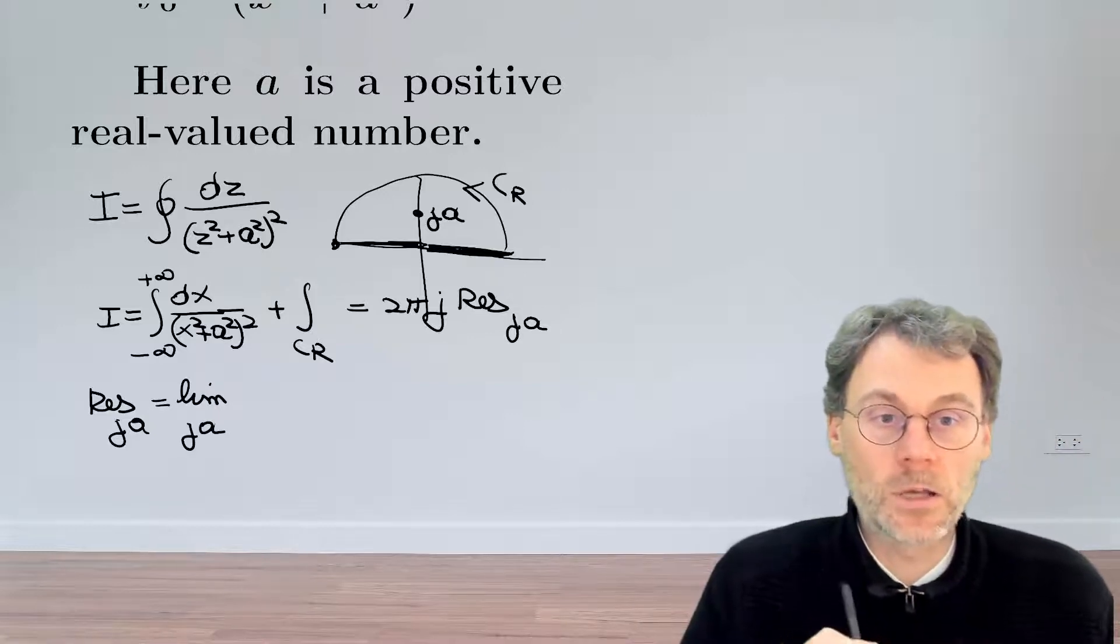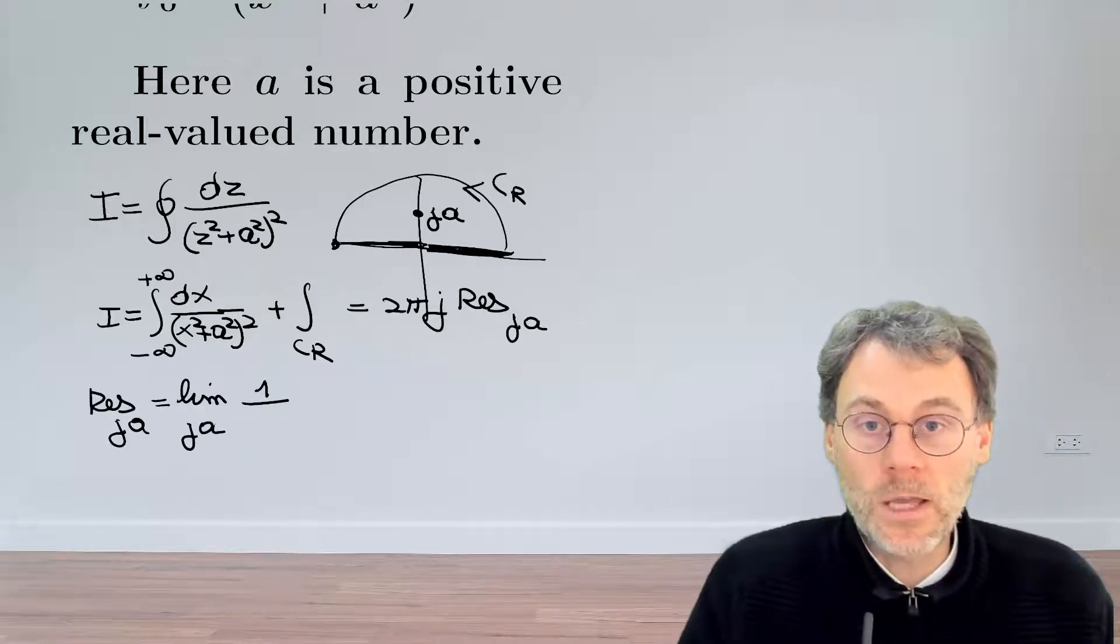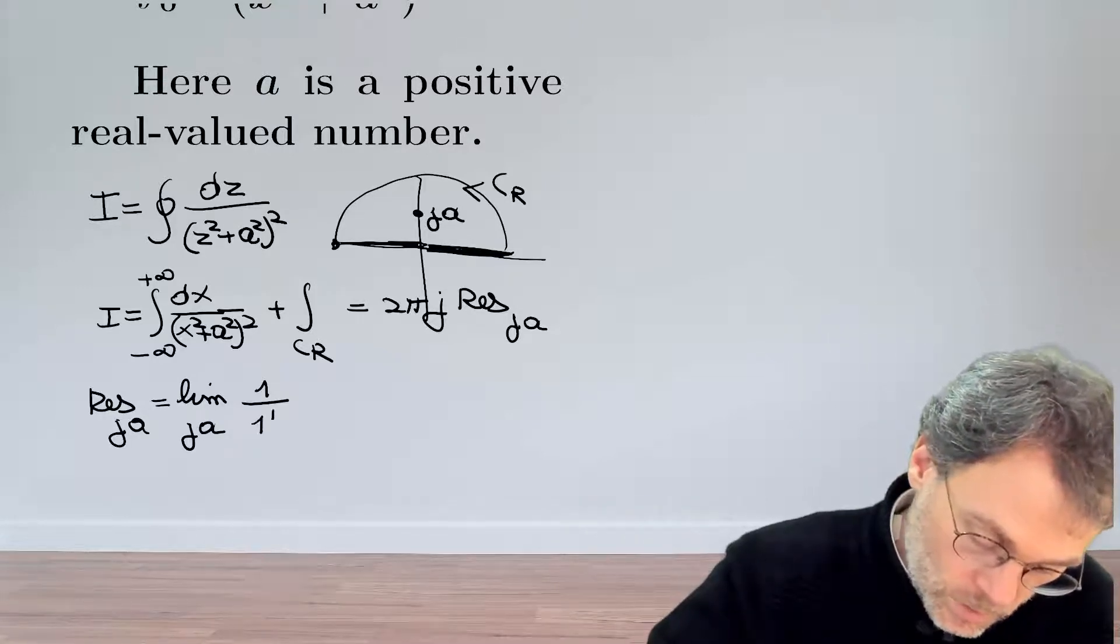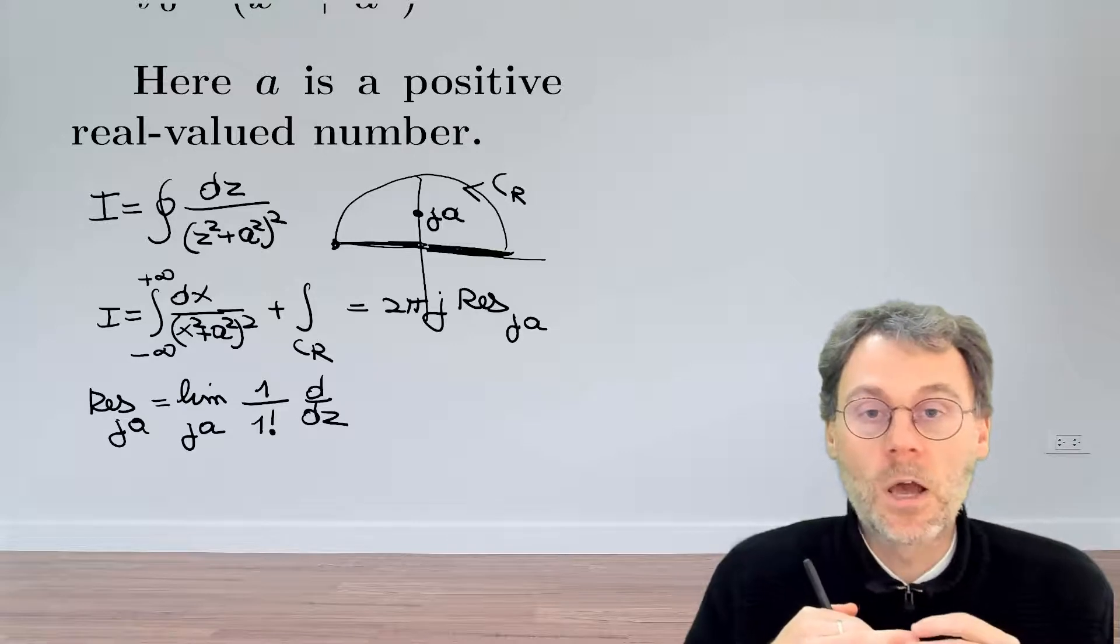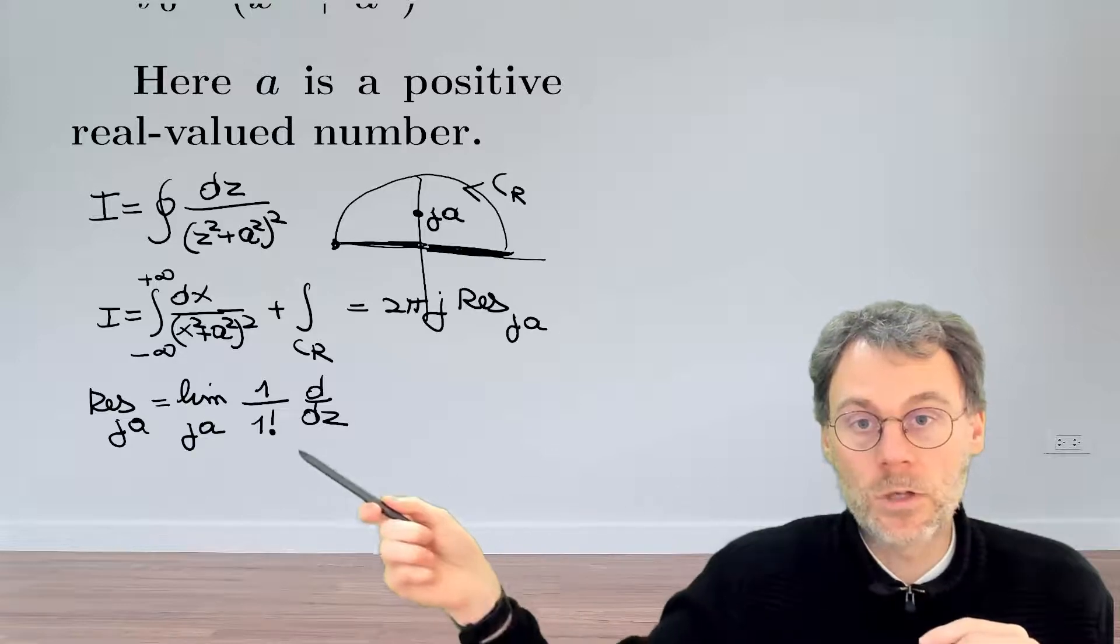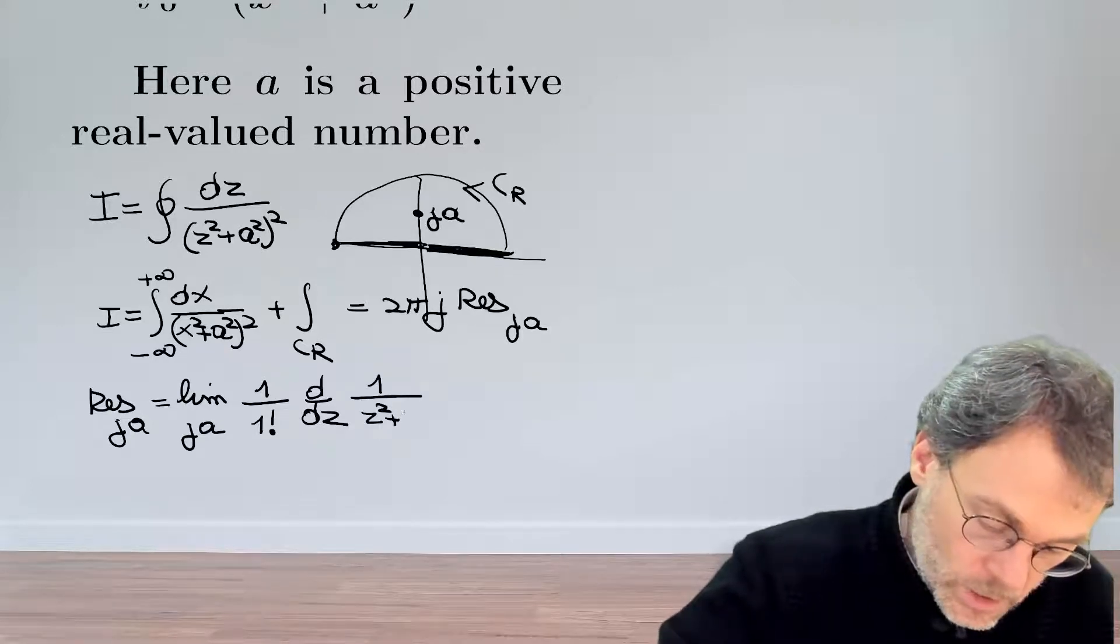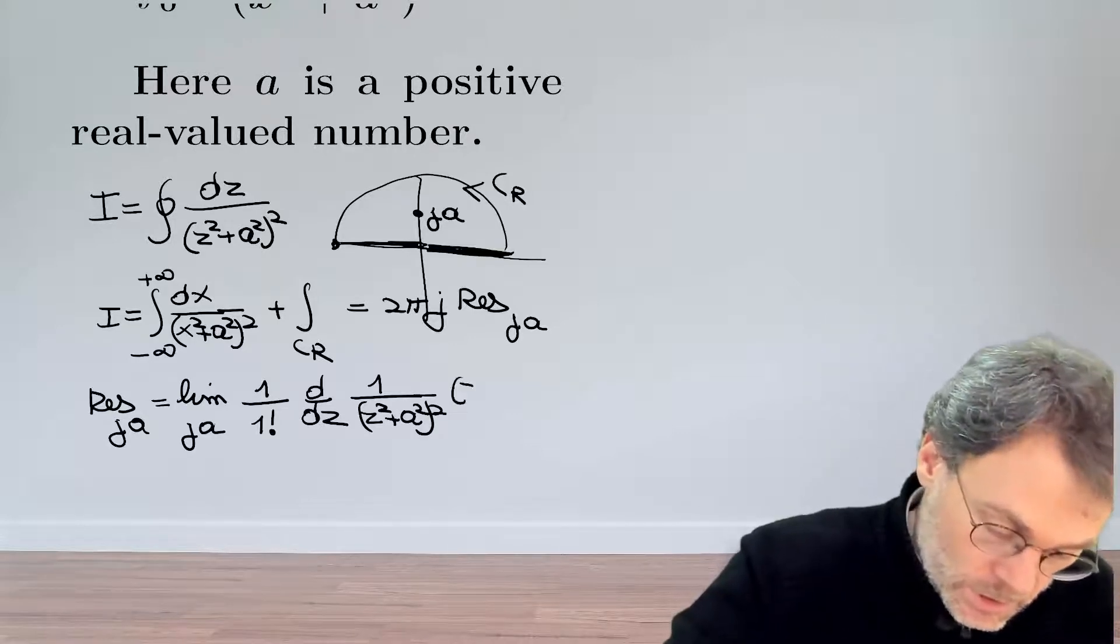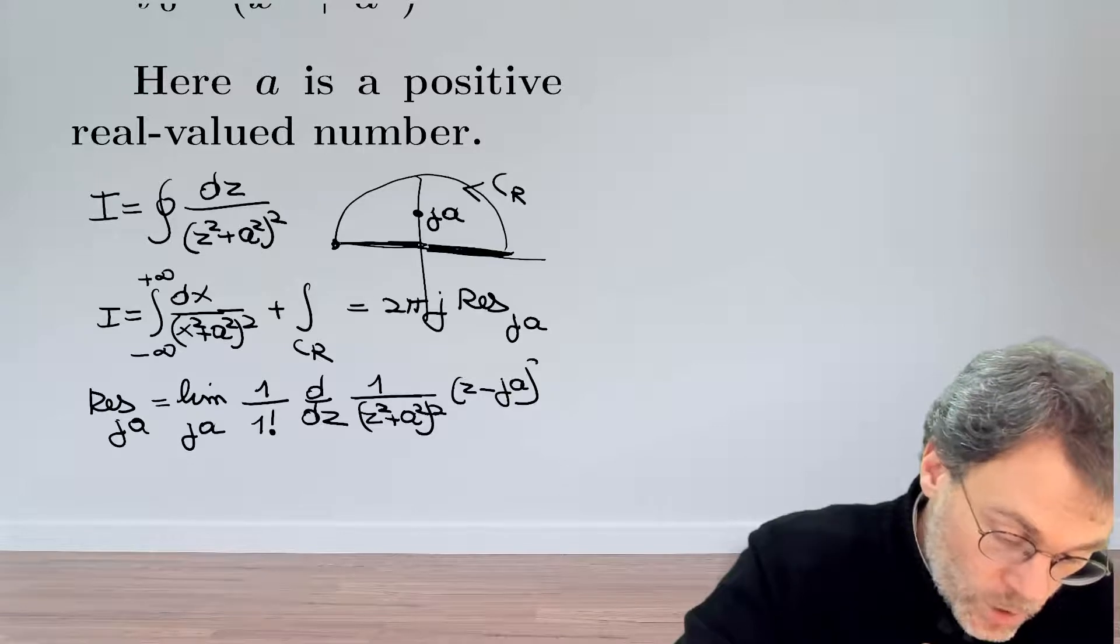...of z approaching ja of one divided by factorial, the factorial being equal to the order of the pole minus one. So this becomes two minus one, that's one, so divided by one factorial. And then we take the derivative with respect to z a number of times. How many times? Well again the order minus one, so this becomes two minus one, so just taking the derivative once. And then we have our function, so that's one over z squared plus a squared squared times z minus the location of our singularity that we're interested in, raised to the power of two.